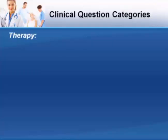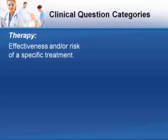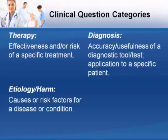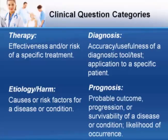A therapy question involves information on the effectiveness and/or the risk associated with a specific treatment — is this intervention more effective than another? A diagnosis question is concerned with the accuracy of a diagnostic tool or test. Etiology and harm questions ask about the causes or risk factors associated with a disease or condition. Finally, prognosis questions involve information about the probable outcome, progression, or survivability of a disease or condition and the likelihood that it will occur.